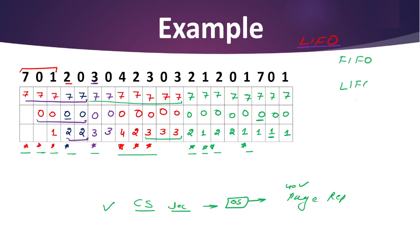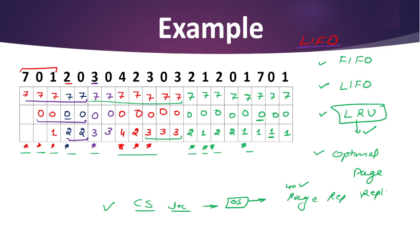We have already covered First In First Out algorithm. In this lecture we covered LIFO. Next we covered Least Recently Used, which is one of the most important topics. One more algorithm is pending — Optimal Page Replacement Algorithm — a very important topic for your examination. If you want more lectures or previous year questions based on LIFO and FIFO, you can comment below.